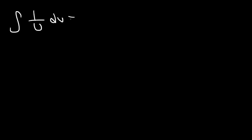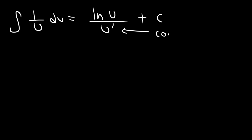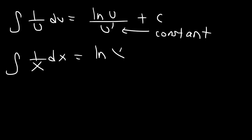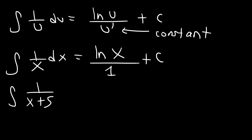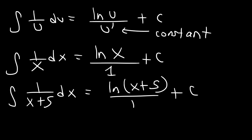Now let's move on to logarithmic functions. The antiderivative of 1 over u du is the natural log of u divided by u prime plus c, where u must be a linear function and u prime must be a constant. For example, the antiderivative of 1 over x is ln x divided by 1 plus c, which is just ln x plus c. If we integrate 1 over x plus 5, the derivative of x plus 5 is 1, so the answer is ln of x plus 5 plus c.